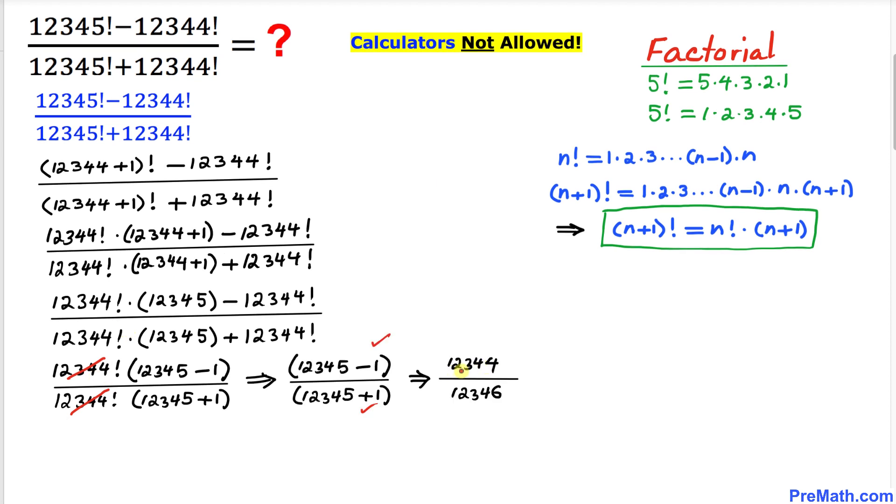So we got 12,344 divided by 12,346. Now let's go ahead and reduce them by dividing by 2 on both sides. Therefore our simplified answer turns out to be 6,172 divided by 6,173.